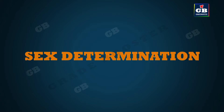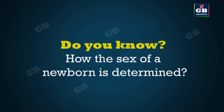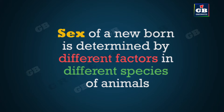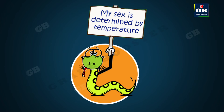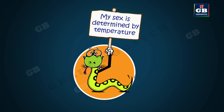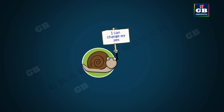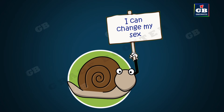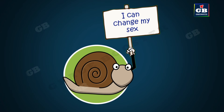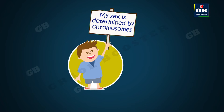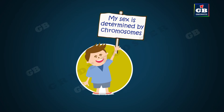Do you know how the sex of a newborn baby is determined? Sex of a newborn is determined by different factors in different species of animals. In reptiles like snakes and crocodiles, the sex of a newborn is determined by temperature. In the case of snails, they can change their sex. In these two cases, sex is not genetically determined.